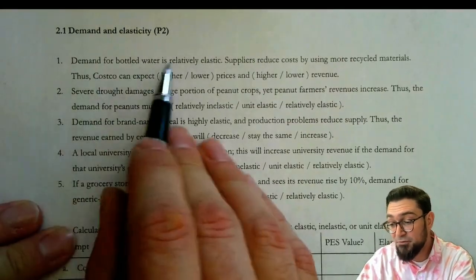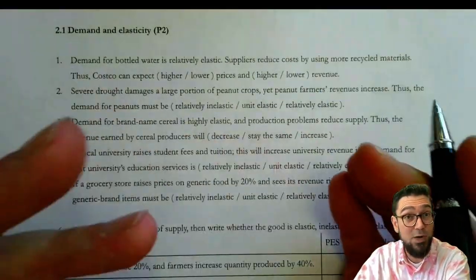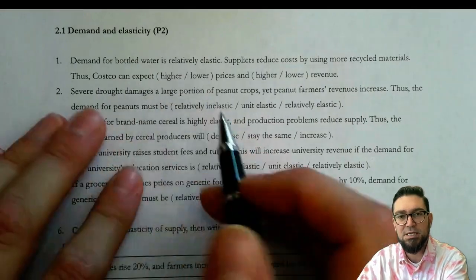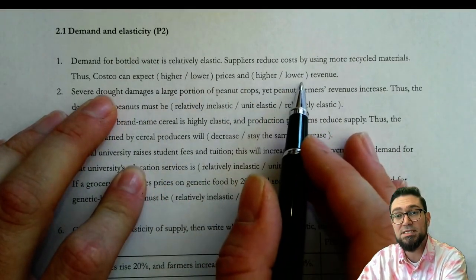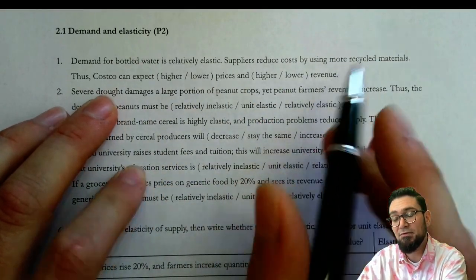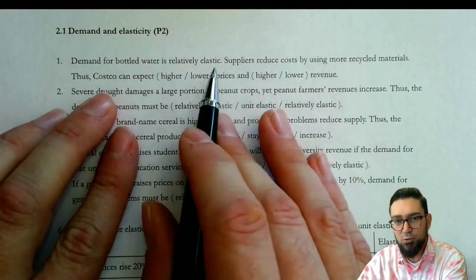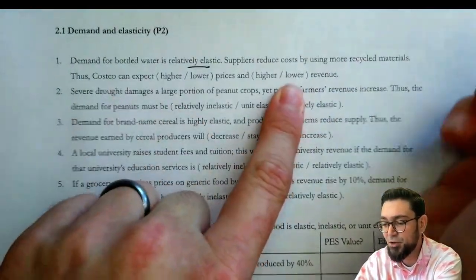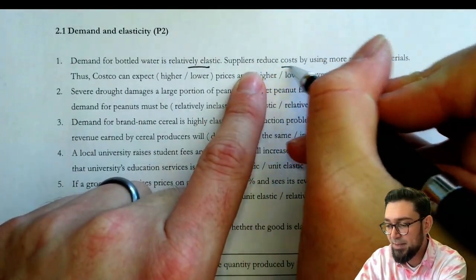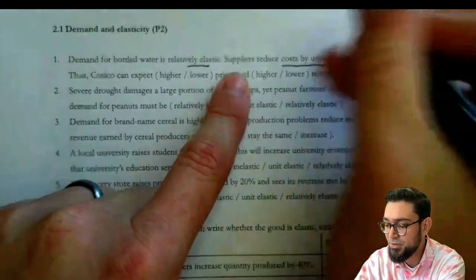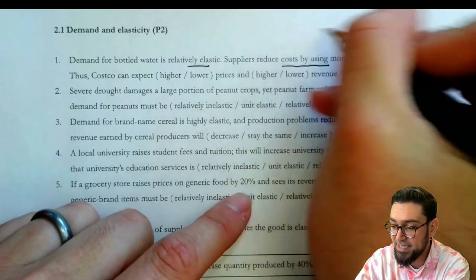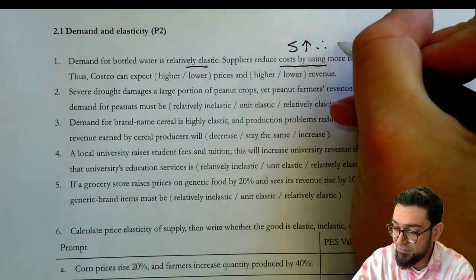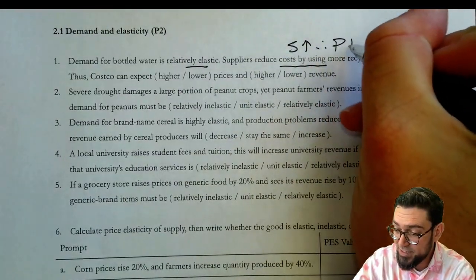This first problem says that demand for bottled water is relatively elastic, and suppliers reduce their costs by using more recycled materials. And thus, we can expect higher or lower prices, higher or lower revenue. This is a tricky one, because the first thing they're telling us — that it's relatively elastic — is going to help us understand the revenue. But here, we're going to find out what's going to happen to that price. So if we know that costs are going down, then I actually know that supply is going to increase. And because of that, I know that price is going to fall.